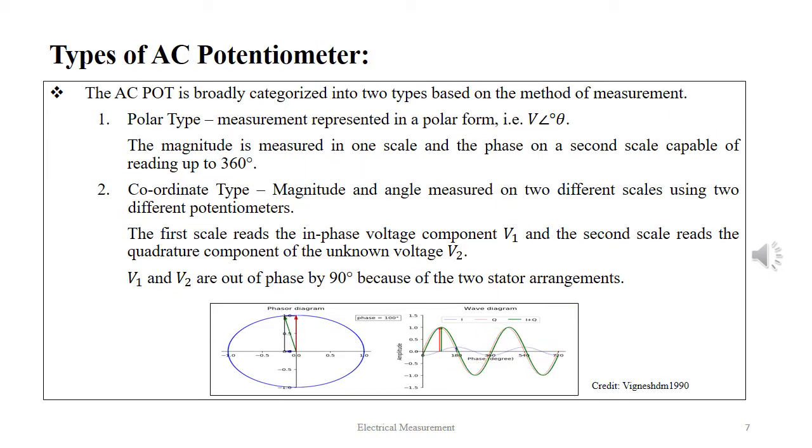The AC pot is broadly categorized into two types based on the method of measurement. Polar type, where measurement is represented in polar form, i.e. V∠θ. The magnitude is measured in one scale and the phase on a second scale capable of reading up to 360 degrees.